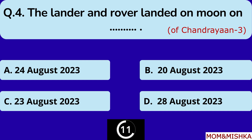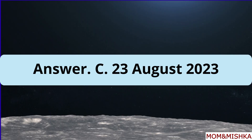The lander and rover landed on the moon on 23 August 2023, option C.